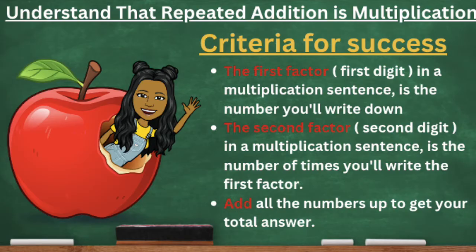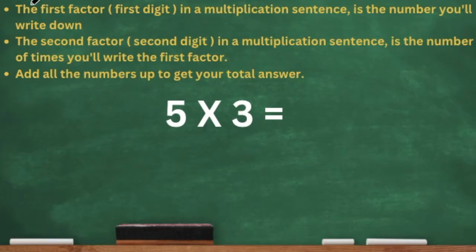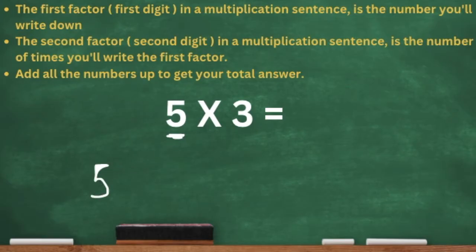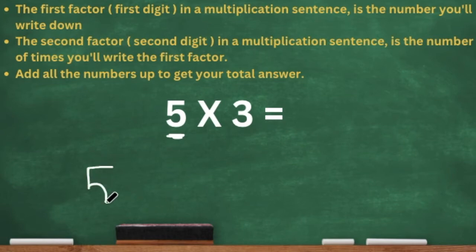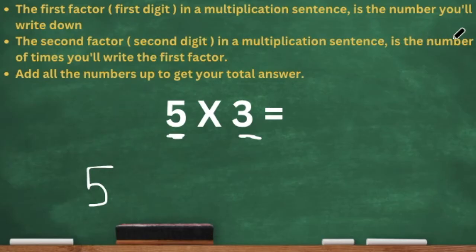Let's jump right into it and get some practice. Okay, so here we have five times three. Our criteria for success says the first factor, which is the five in the multiplication sentence, is the number you'll write down. So since the first factor is five, we're just going to write down five. And now the second factor, which is the three in a multiplication sentence, is the number of times you'll write the first factor down.